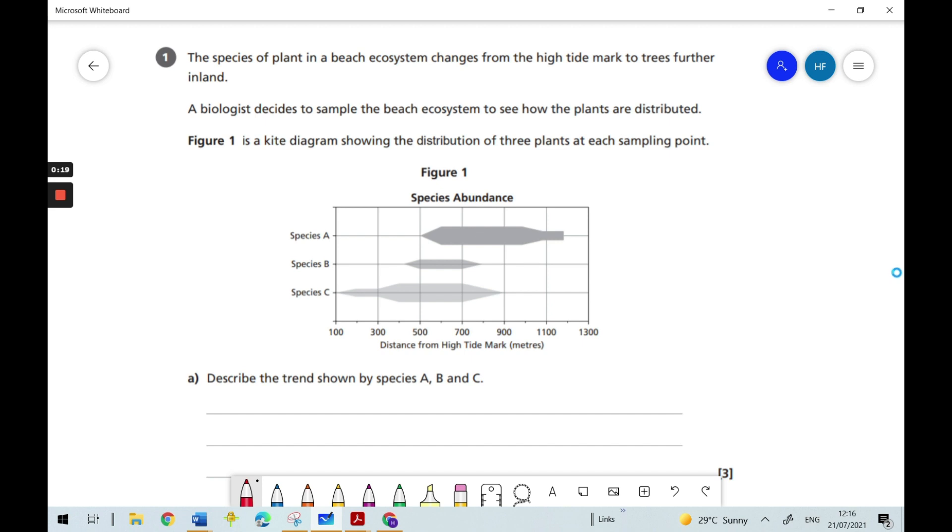A biologist decides to sample the beach ecosystem to see how the plants are distributed. Figure 1 is a kite diagram showing the distribution of three plants at each sampling point. And there we have a kite diagram. Part A of the question says, describe the trend shown by species A, B and C.